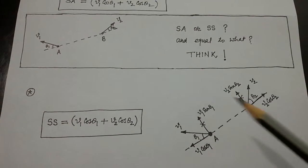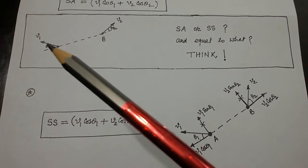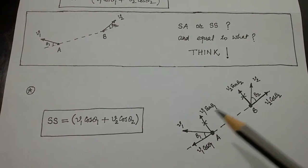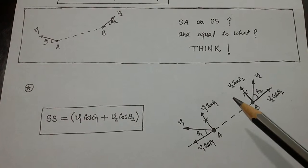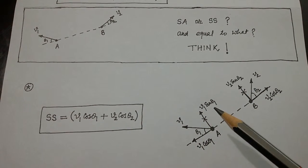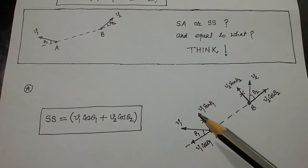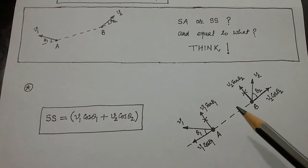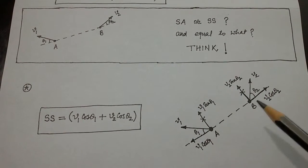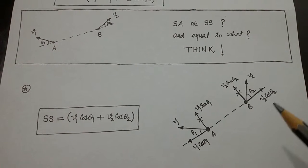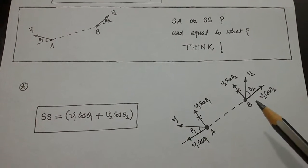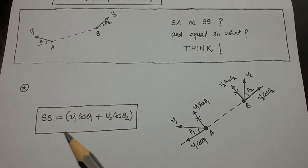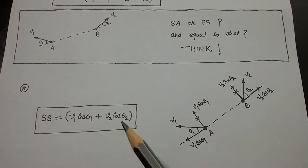When we make components — cos component and sin component — the sin components V1 sin theta 1 and V2 sin theta 2 are perpendicular to the line joining the two particles and play no role. Due to the cos components the particles are separating. Therefore, speed of separation is equal to V1 cos theta 1 plus V2 cos theta 2.